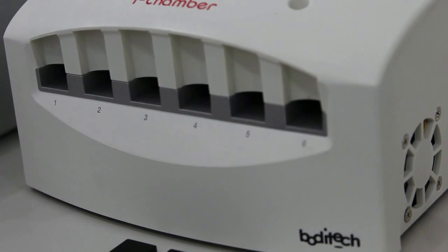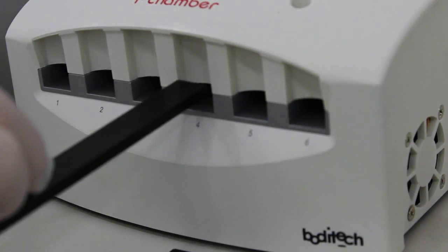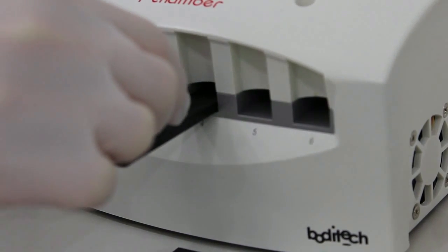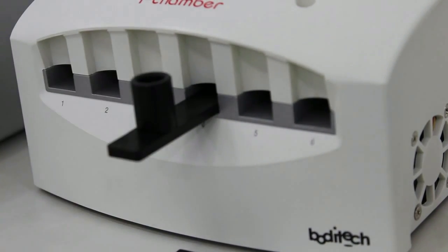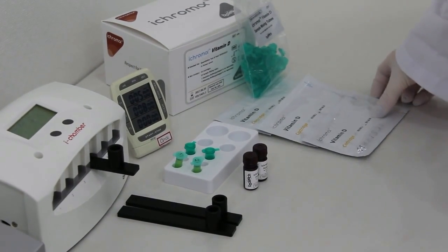Insert the tube block into the iChamber slot at least 10 minutes before the test. Don't push it all the way inside so as not to trigger the timer.